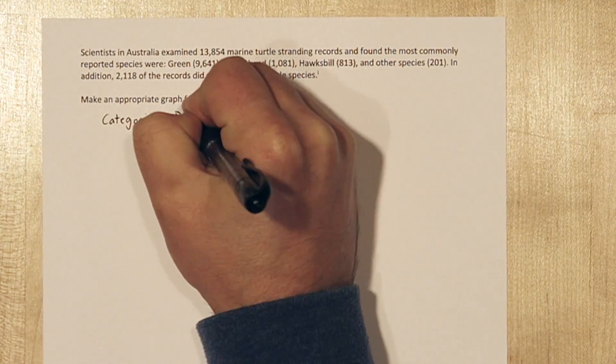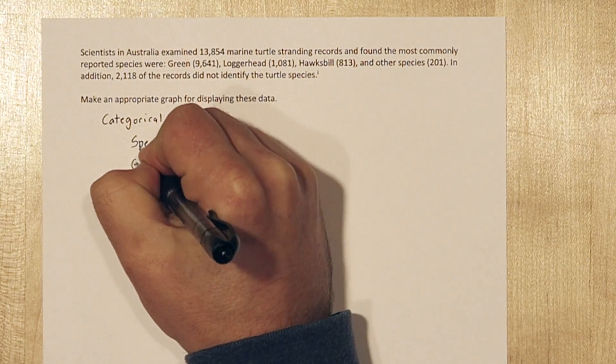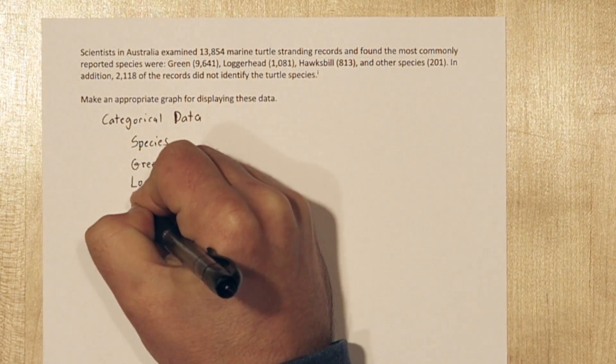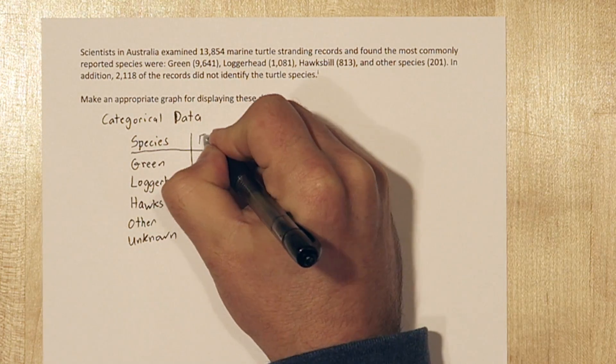The first thing to notice about this problem is the data is categorical. And for categorical data we usually use pie charts or bar graphs, but let's start by making a table.